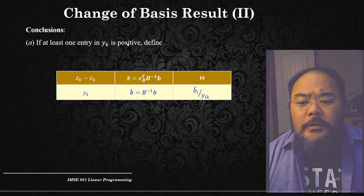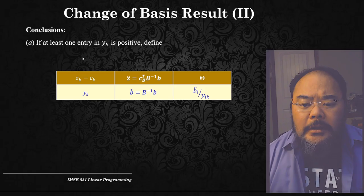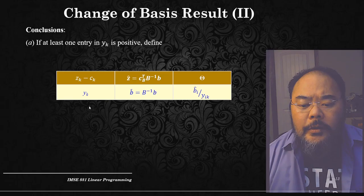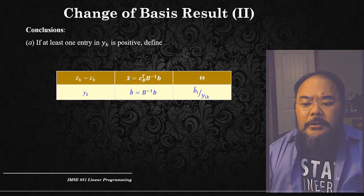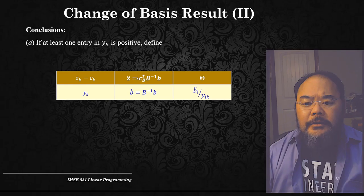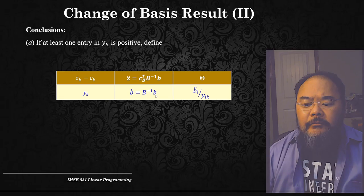Once we determine y_k is positive — if at least one entry in y_k is positive — we look at the simplex tableau again. The entering column z_k minus c_k represents the largest positive value. We update y_k with B inverse times a_k. The right-hand side in row zero, z-hat, is the current objective function value equal to c_B transpose times B inverse times b. The current basic solution b-hat equals B inverse times b.